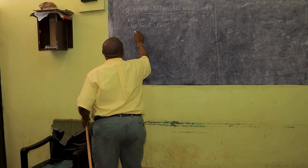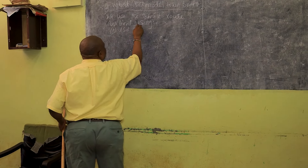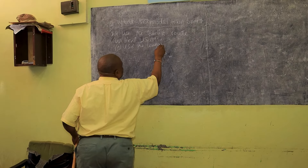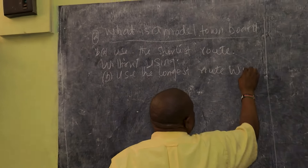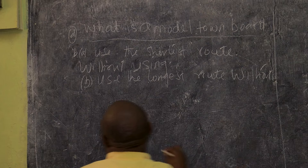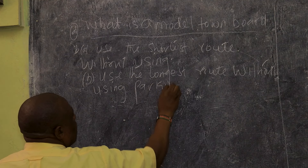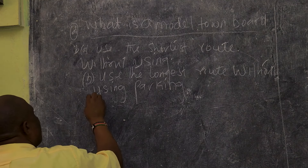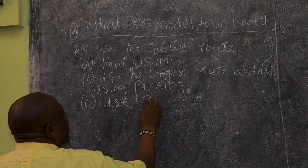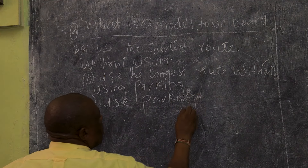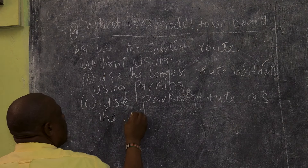The second rule says: use the longest route using parking. And the third rule is to use the parking route as the only option.